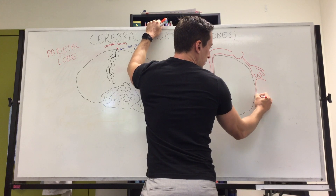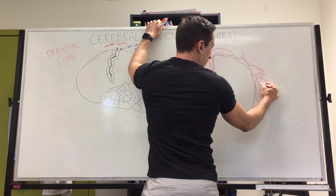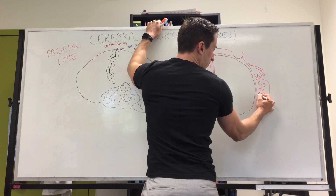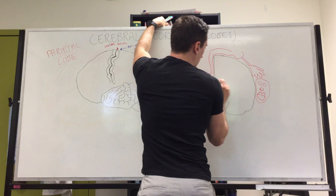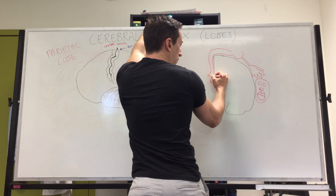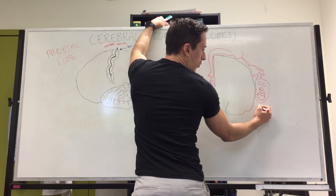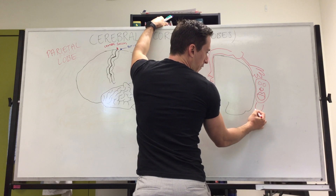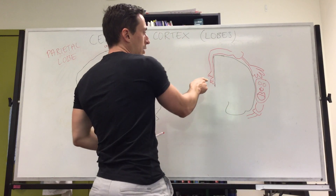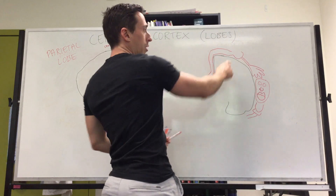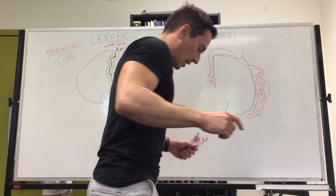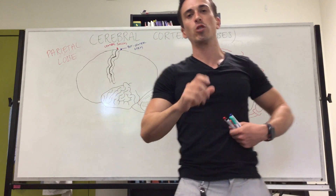Continuing the somatosensory homunculus: we have the arm and the hand, then the face with a nose and big lips, then genitals, foot, tongue, pharynx — which is the throat — and then the esophagus. So for the somatosensory cortex we have: genitals, foot, leg, torso, back of the head, arm, hands, face, lips, tongue, pharynx, and esophagus.